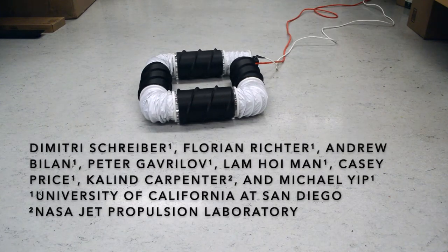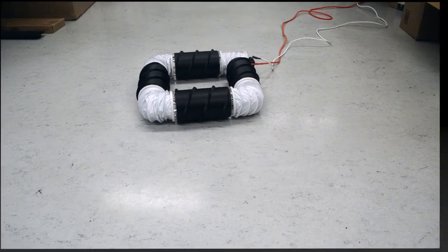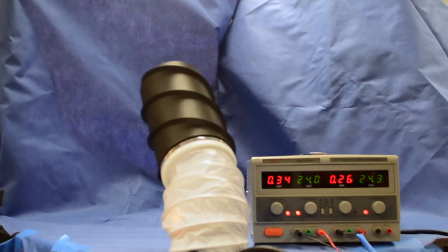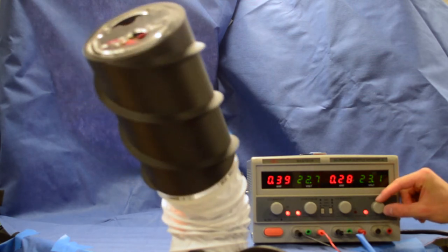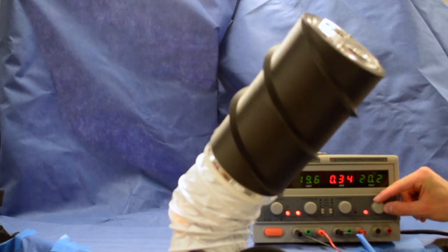ArcSnake is comprised of identical modules which are serially linked. Each module is composed of a self-contained 2 degree of freedom universal joint for positioning and an Archimedes screw for propulsion.